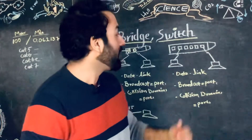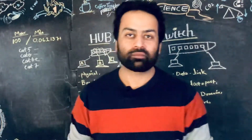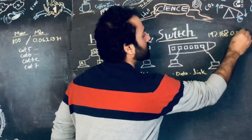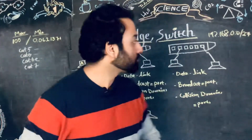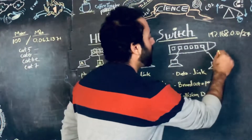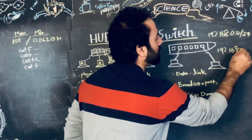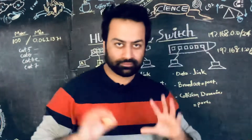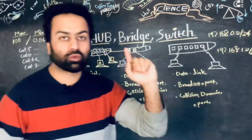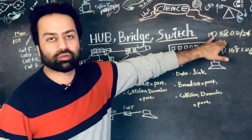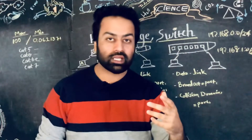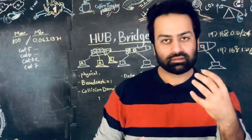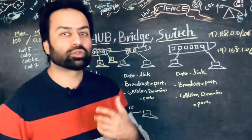Switch broadcast domain is equal to port number — each port represents its own broadcast domain. For example, 192.168.0.0/24 is one broadcast domain, and 192.168.1.0/24 is a second broadcast domain. So when hub's broadcast domain equals one, you can only connect devices through a single broadcast domain. With a switch, each port can represent its own broadcast domain, and you can configure VLANs through logical interfaces.